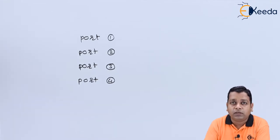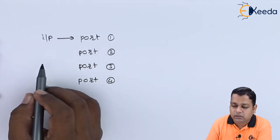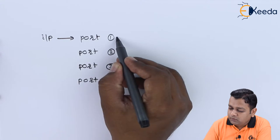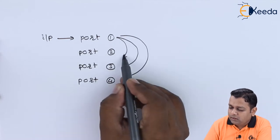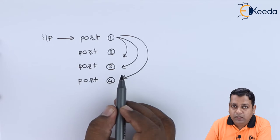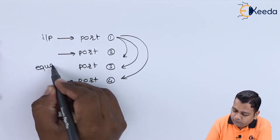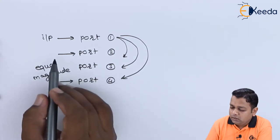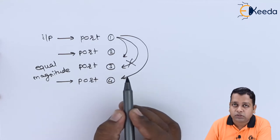The behavior of the Lange type hybrid coupler is as follows: if we provide an input microwave signal to port number one, the microwave signal will be passed to the alternate and other ports. The outputs are such that port number two and port number four will have equal magnitude and in-phase microwave signal components.